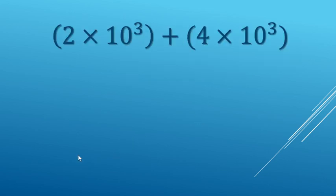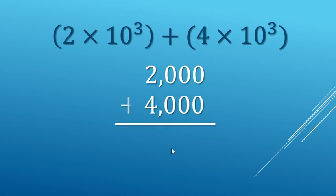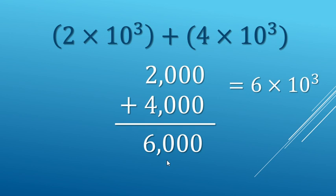Now adding in scientific notation, we're going to rewrite these in expanded form. That's going to be 2,000 here and 4,000 here. We're going to add those together and it makes 6,000. Again, that's a 6 followed by 3 zeros, 6 times 10 to the 3rd power.